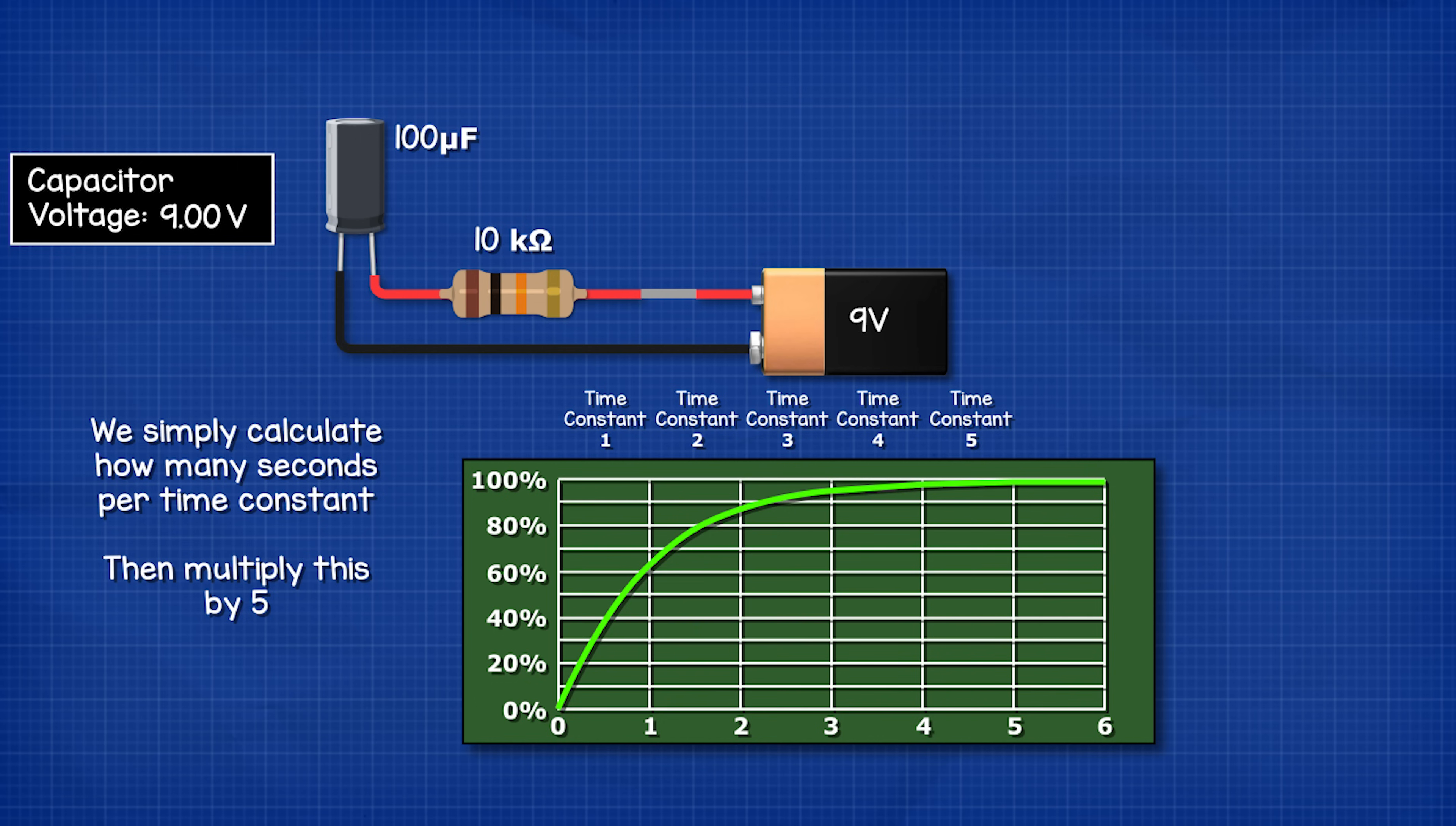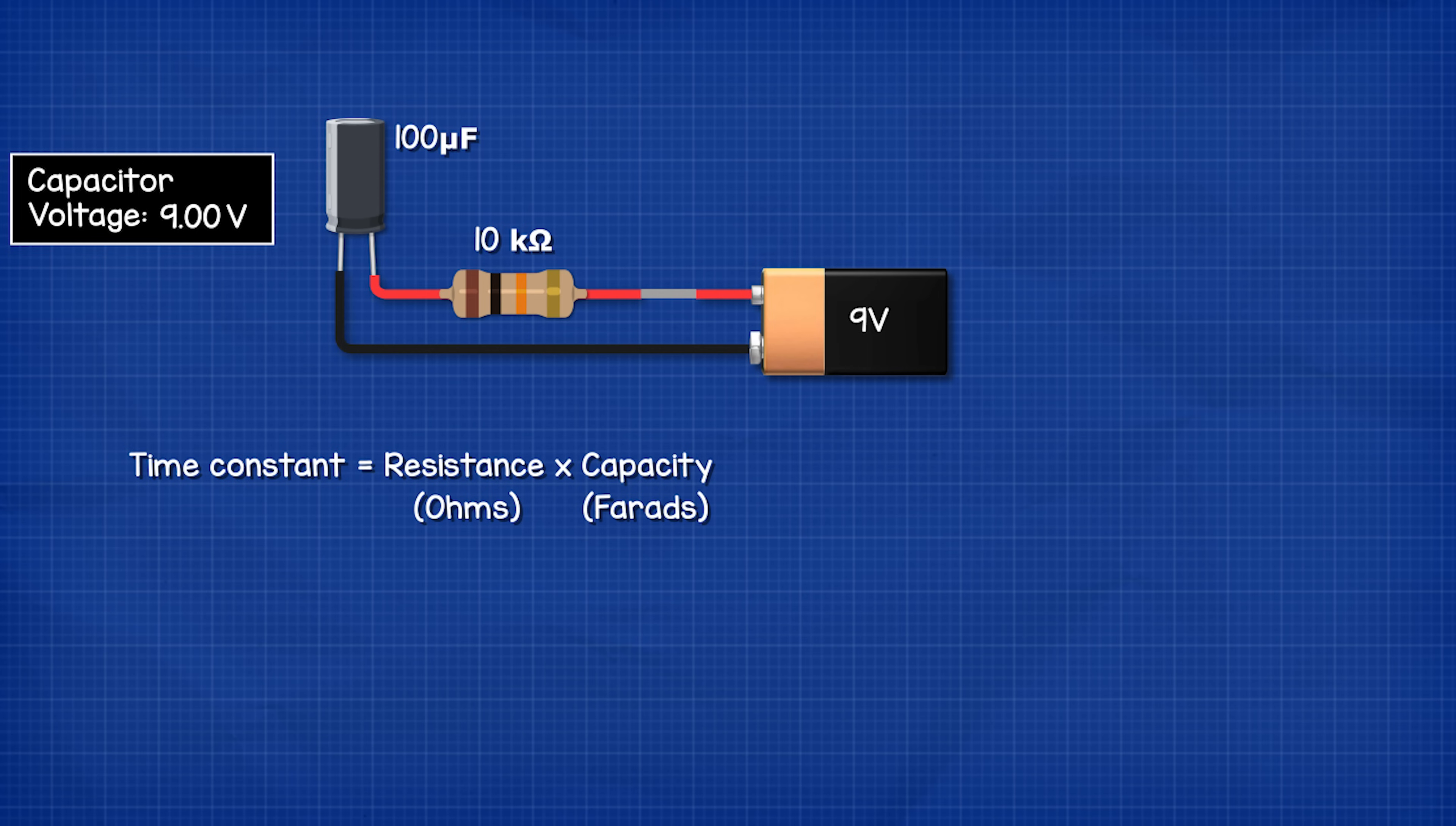All we need to do is calculate how long one time constant is and then multiply this by five. To calculate the time constant we use this formula. Time constant in seconds equals the resistance in ohms multiplied by the capacity in farads.